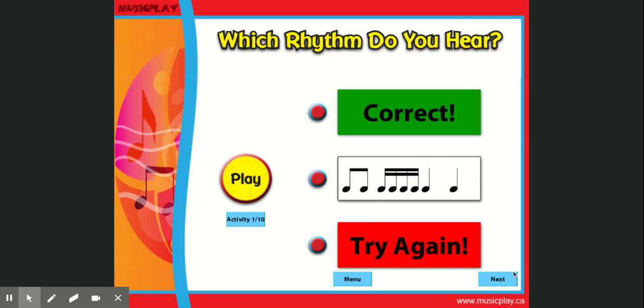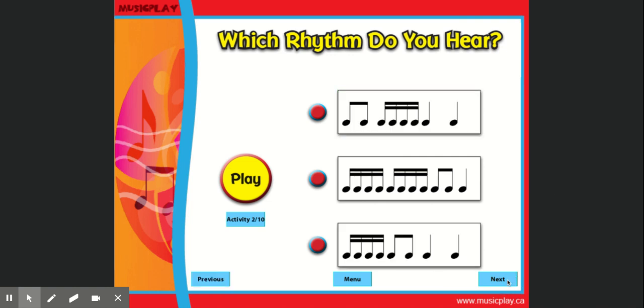When you've clicked it and you're correct, you hit the next button and you go on to the next screen. And then again, hit play and then you'll choose whichever one you think that it is.